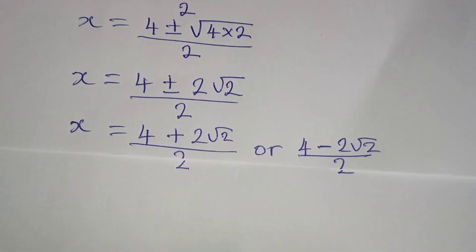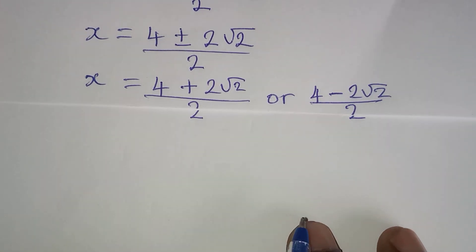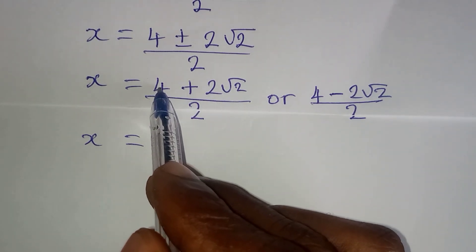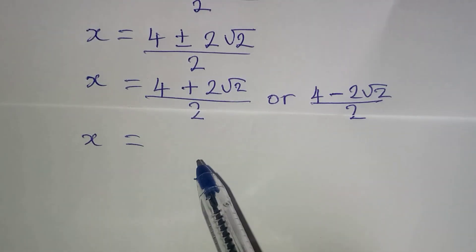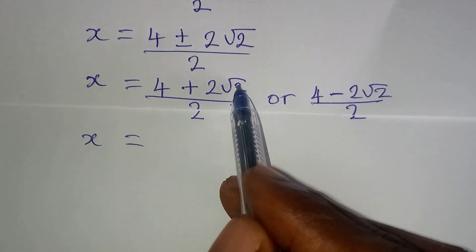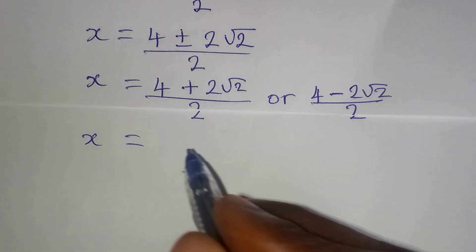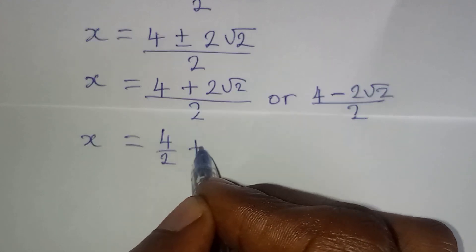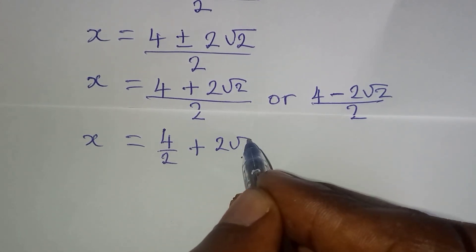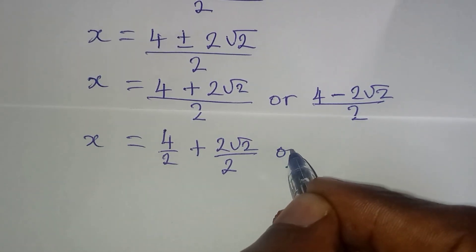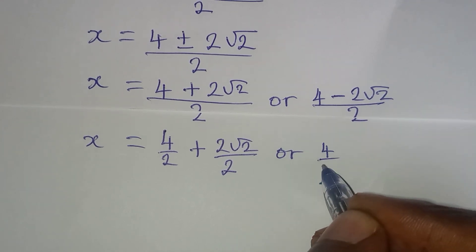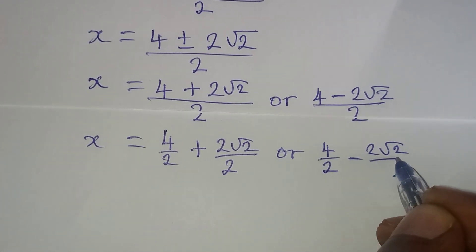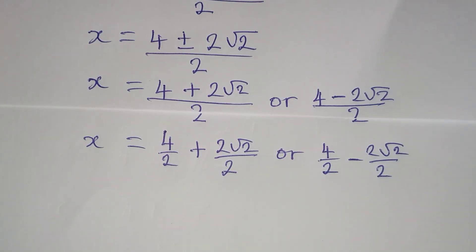This is what this means. And then I'm going to continue so that x will be equal to... Now I cannot add 4 and 2 root 2 because 4 here is not carrying root 2. But what I will do is to split this because this is the same thing as 4 over 2 plus 2 root 2 over 2, or I have 4 over 2 minus 2 root 2 all over 2.